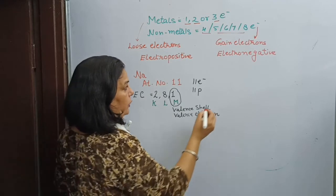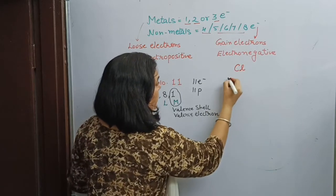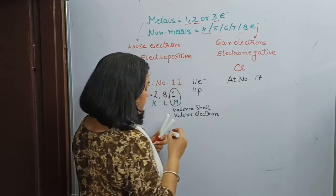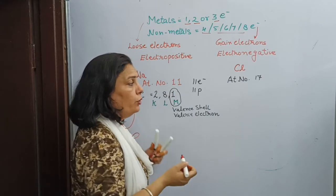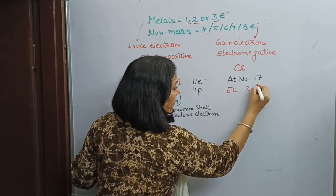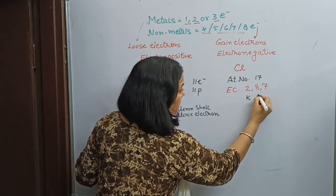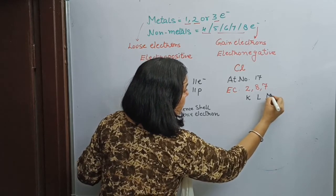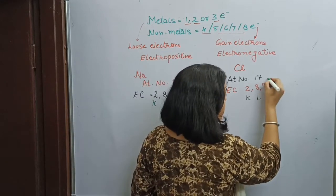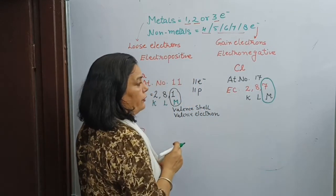The second element we take is chlorine. The symbol of chlorine is Cl and its atomic number is 17. The electronic configuration of chlorine — the distribution of electrons in various shells — is 2, 8, 7. Its K shell has 2 electrons, its L shell has 8 electrons, and the M shell has 7 electrons. The M shell is the outermost shell, also known as the valence shell, and 7 is the number of valence electrons.